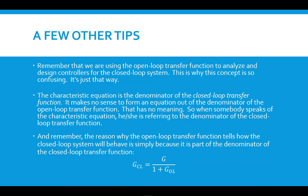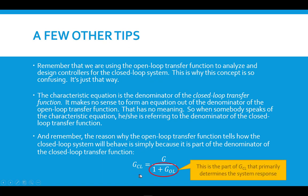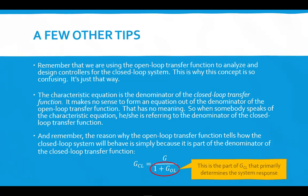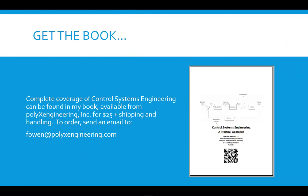Remember the reason why the open loop transfer function tells us how the closed loop system is going to behave: it's because the open loop transfer function is a part of the denominator of the closed loop transfer function — actually the most important part — because it tells how the system is going to respond. We take that denominator, set it equal to zero, and that is the characteristic equation; it characterizes how the system is going to respond to an input. This and more can be found in my book, Control Systems Engineering: A Practical Approach, available by sending an email to me.